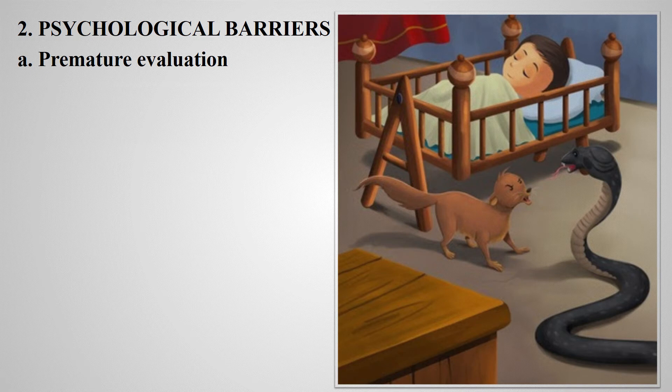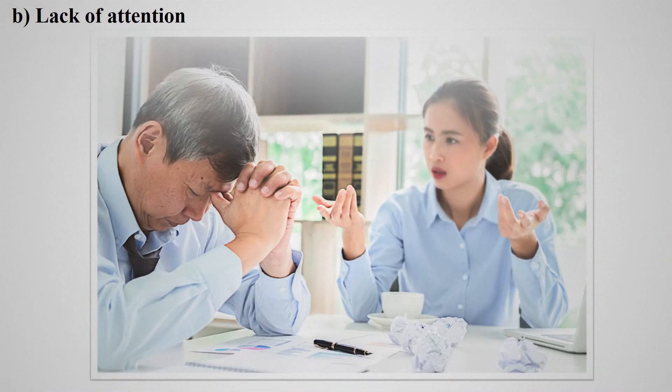The second psychological barrier is lack of attention. If the receiver is not listening properly or is absent-minded, it may act as a barrier. For example, an employee explains a problem to his boss, but the boss is thinking about an important file. The boss did not grasp the employee's problem, leaving the employee disappointed and the message not conveyed.